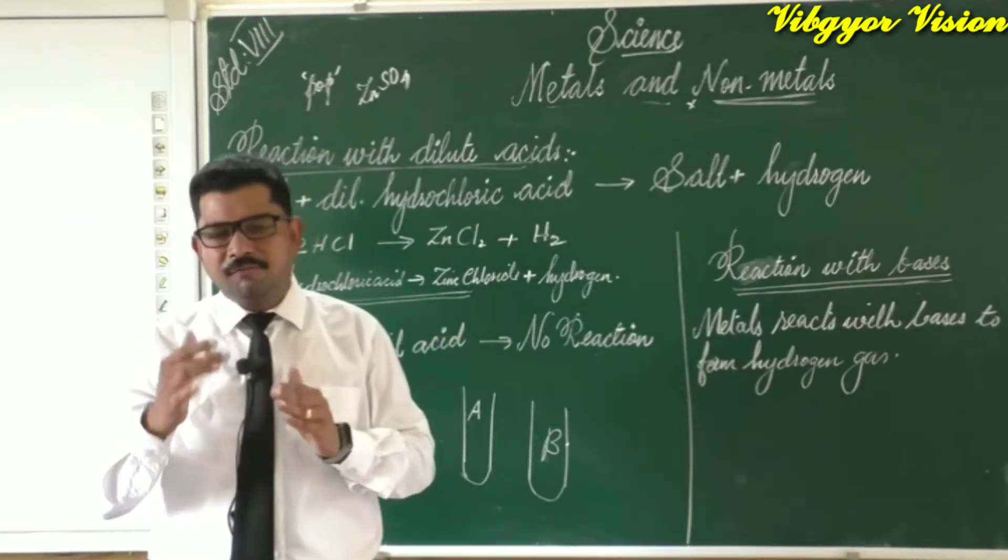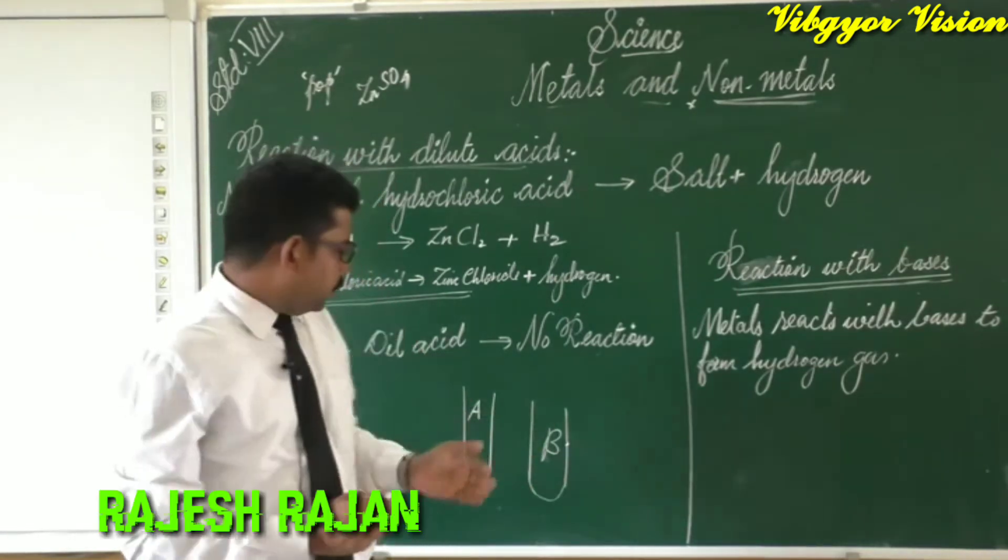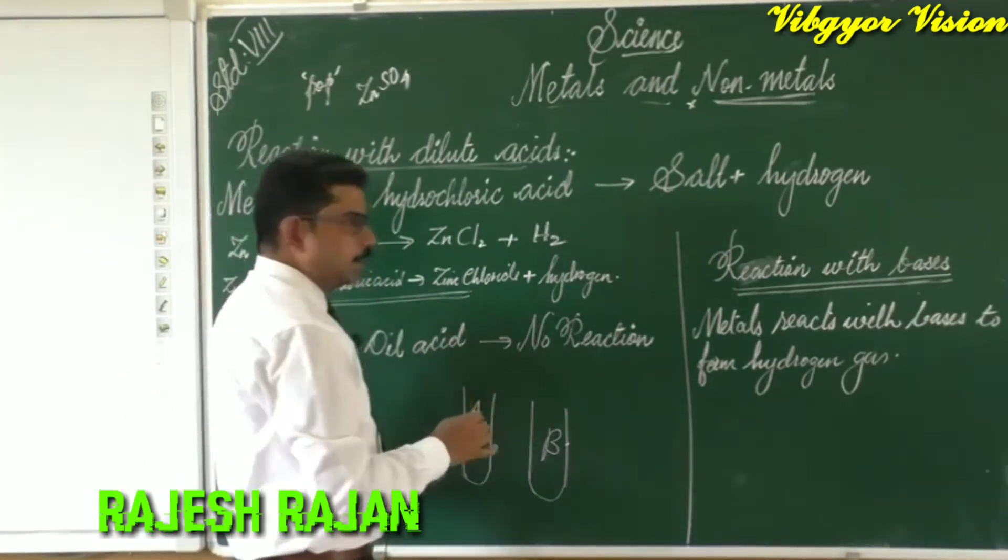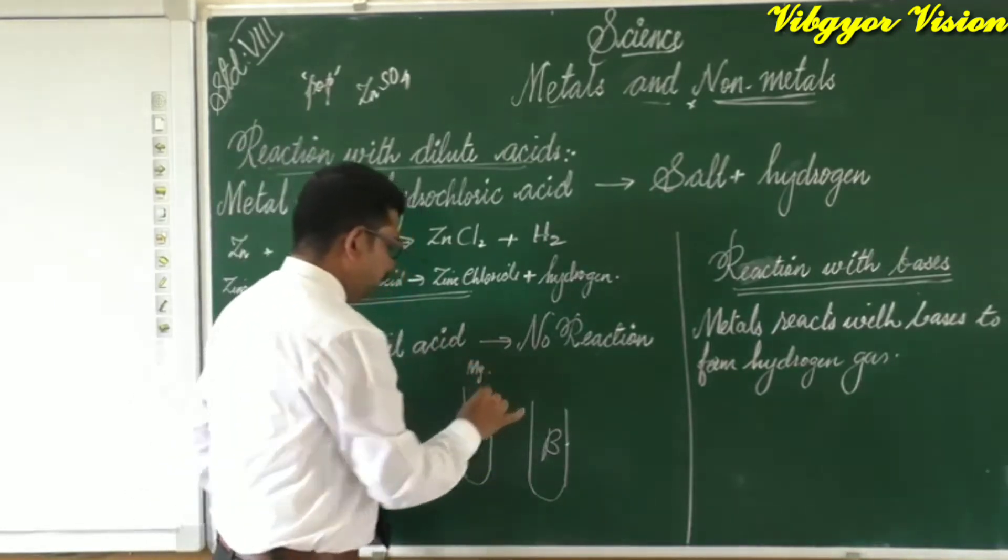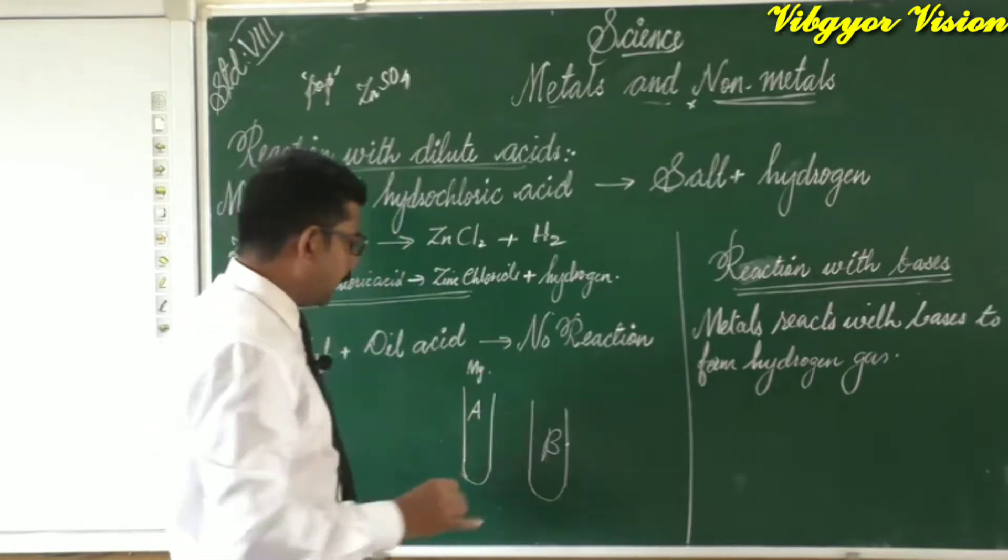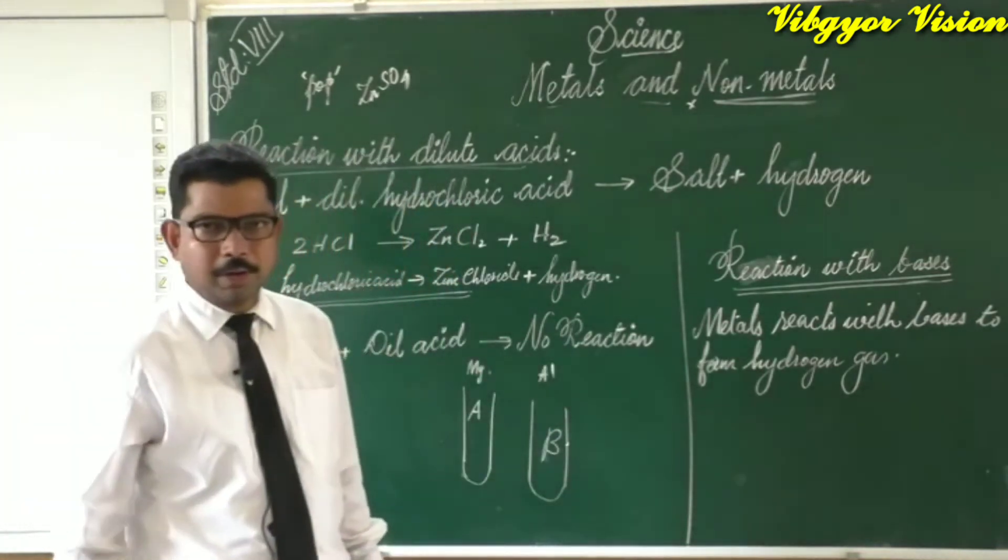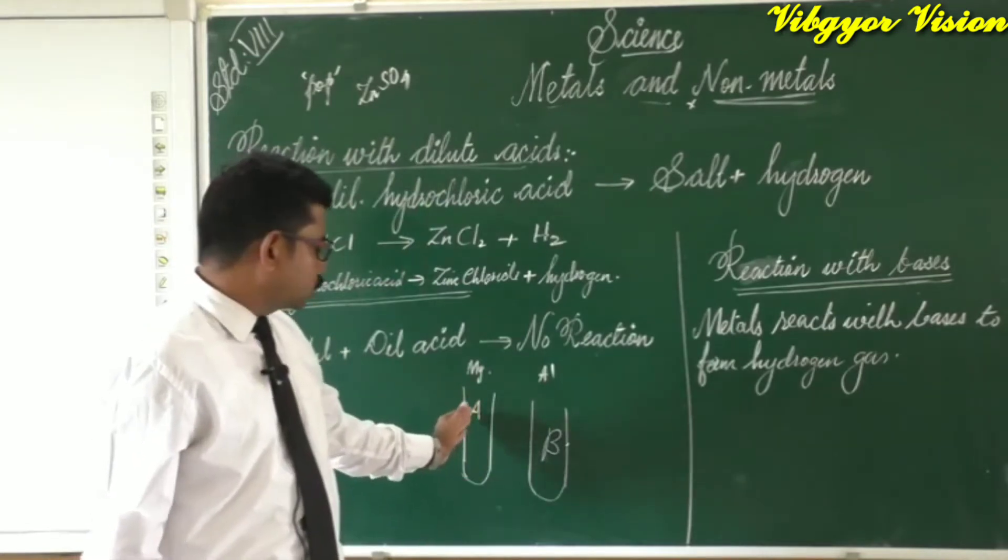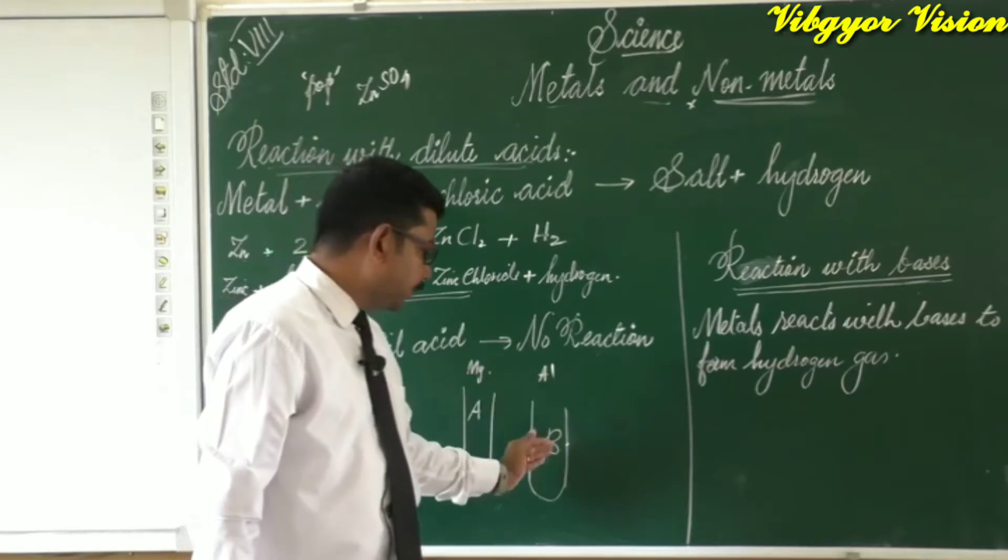To this beaker, we have to take nearly 5 ml of sodium hydroxide solution. To test tube A, we can add a piece of magnesium ribbon, and to test tube B, we can add aluminum foil. Test tube A contains sodium hydroxide and magnesium, and test tube B contains sodium hydroxide solution and aluminum foil.